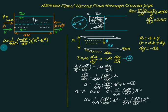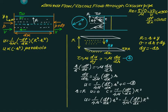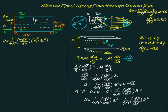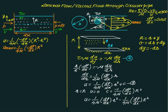Substituting back, the velocity profile becomes: u equals (1/4 mu) times (minus dP/dx) times (R squared minus r squared). This equation shows that u is proportional to minus r squared, which is a parabola — so the velocity distribution in laminar pipe flow is parabolic. The maximum velocity occurs at the center where r equals 0: u_max equals (1/4 mu) times (minus dP/dx) times R squared.